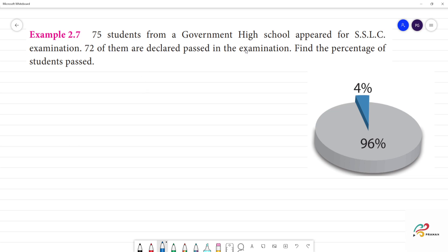75 students from a government high school appeared for SSLC examination, class 10 examination. 72 of them are declared passed in the examination. Find the percentage.